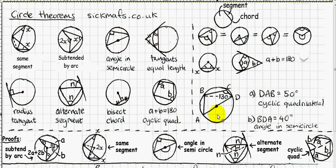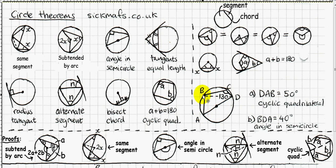Here's how a typical circle theorems question looks. You're told an angle is 130 degrees and asked to find angle DAB. In three-letter notation, the middle letter is where the angle is, so DAB is the angle at vertex A. The answer is 50 degrees — let's see how to work that out.